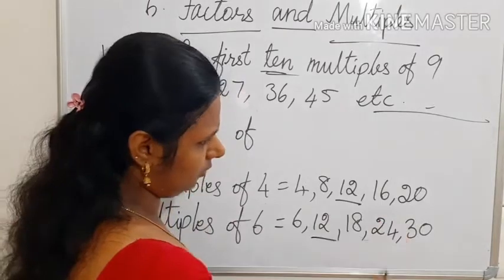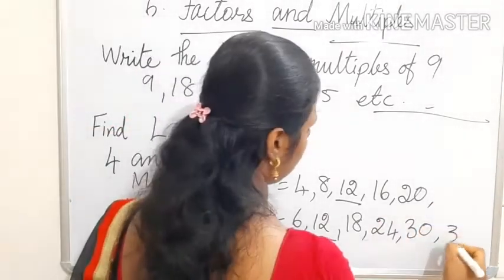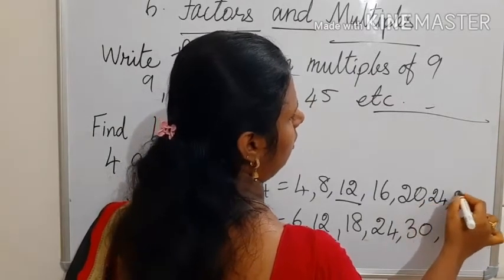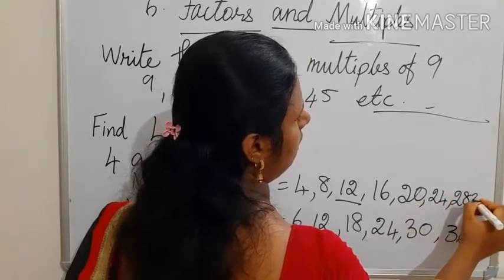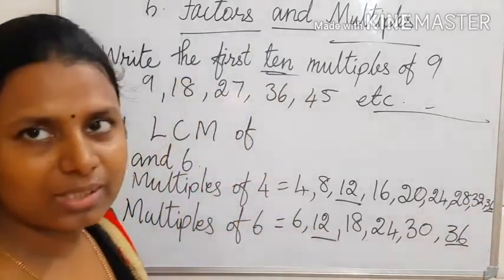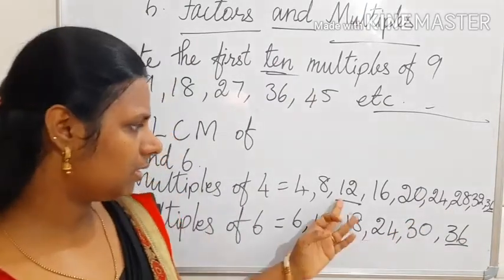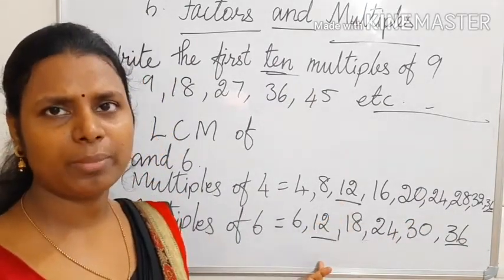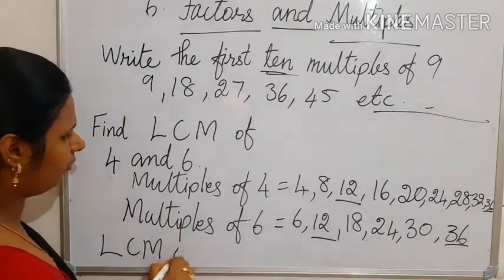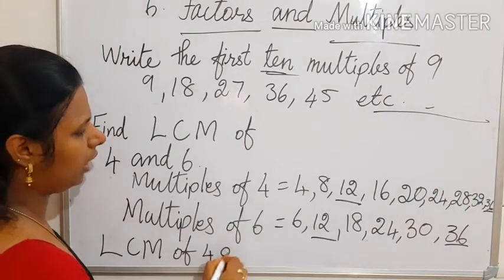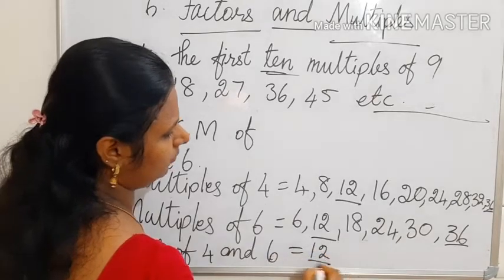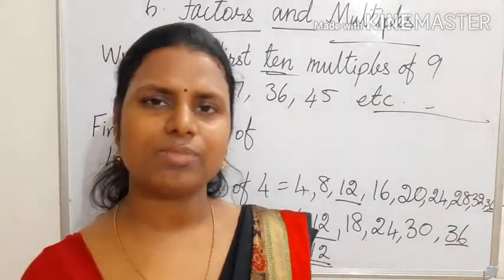12 and 12—only one common number. If we continue, here 36, and here 24, 28, 32, then 36. The next common will be 36, isn't it? If you need it, you can write. Otherwise, the least number, the smallest common number, is 12. So LCM of 4 and 6 is equal to 12.